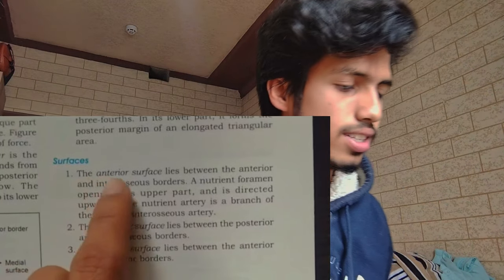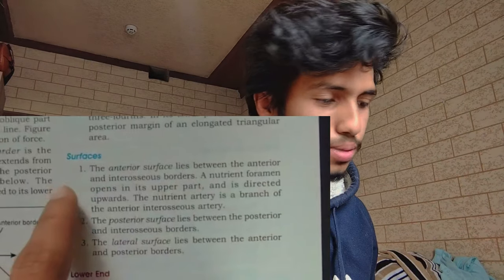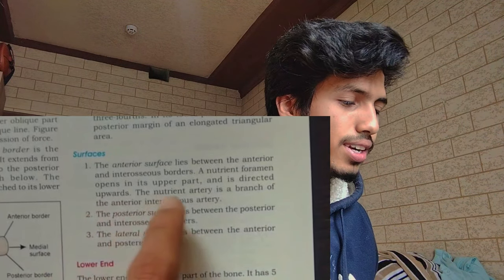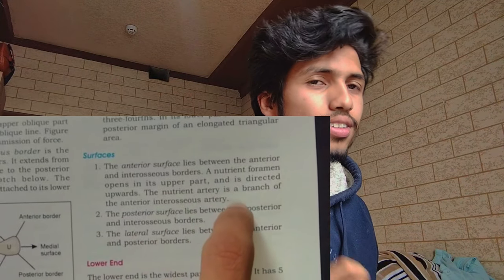See, this is BDC — this is an old version, but let me read you just one line about upper limb anatomy: 'The anterior surface lies between the anterior and interosseous borders. A nutrient foramen opens in its upper part and is directed upward. The nutrient artery is a branch of the anterior interosseous artery.' Just like that — you didn't understand anything. So BDC is not the book for beginners.